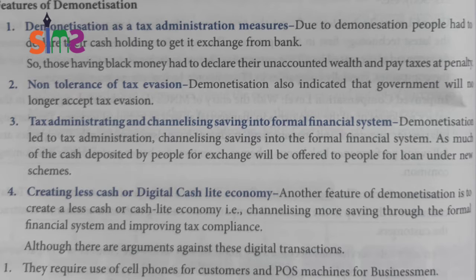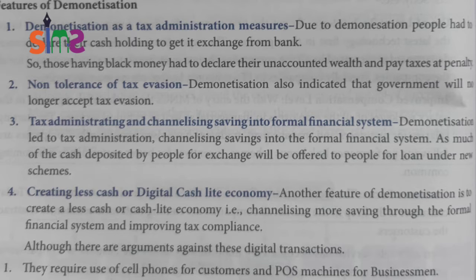How did demonetization tackle corruption? If someone had accepted a bribe — say 10,000, 15,000, 20,000, or 2,00,000 rupees in cash hidden at home — when they went to the bank to deposit that cash, the income tax authorities would ask: how much cash is this? Where did this money come from?